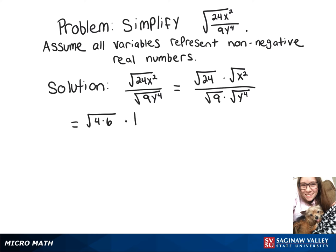Then the square root of x squared is the absolute value of x. Now all that is over the square root of 9 is 3 times the absolute value of y squared.